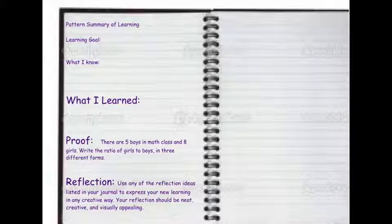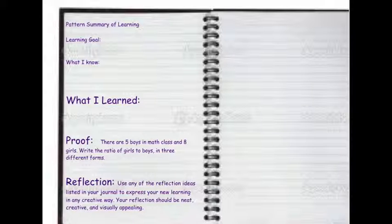Lastly, your practice problem says: there are five boys in math class and eight girls. Write the ratio of girls to boys in three different forms. Hopefully, you remember what those forms are.